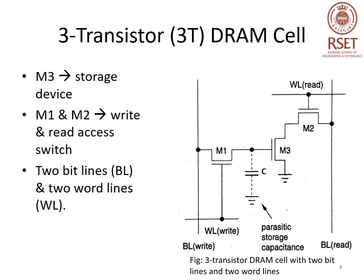Next, we will discuss three transistor DRAM cells. As shown in the figure, we have three transistors M1, M2, M3 and a parasitic capacitor. In the three transistor DRAM cell, M3 is used as a storage device, where the transistor is turned on or off depending upon the charge stored in the gate capacitor. For read and write operations, M2 and M1 act as access switches.